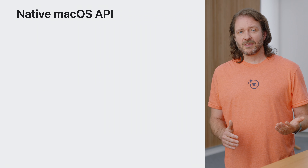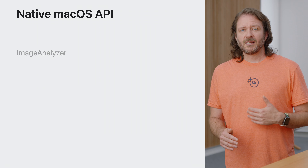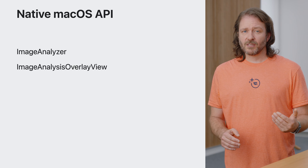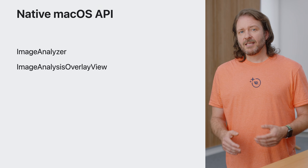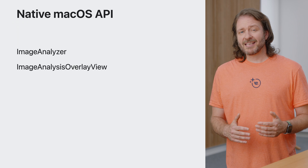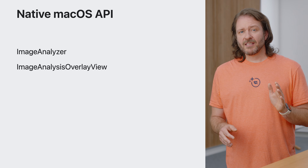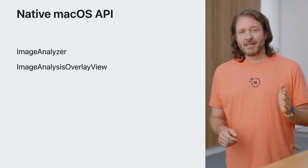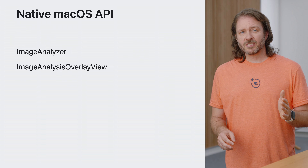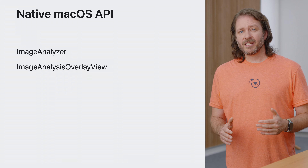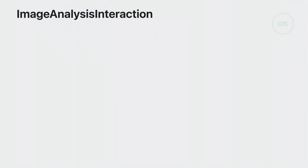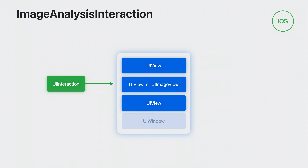Now I'm going to transition to the native macOS API. As with iOS, there are two major classes you need to be aware of when adopting VisionKit: the image analyzer and the image analysis overlay view. The image analyzer and analysis process for the Mac is identical to iOS. With the exception of machine readable codes being a no-op, everything is the same and is used the same way. The main difference between the iOS image analysis interaction and macOS's image analysis overlay view is how the interaction is added to your application.